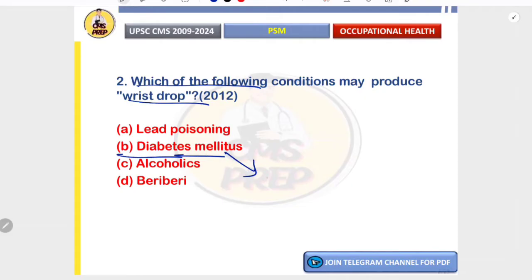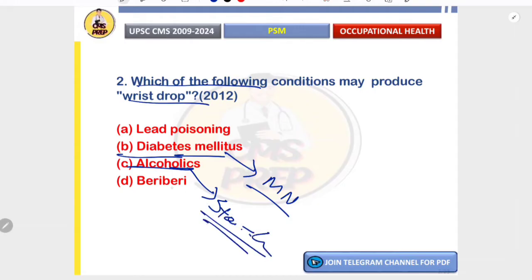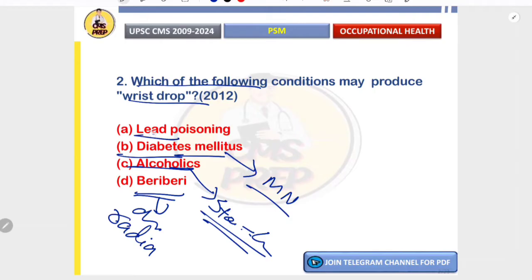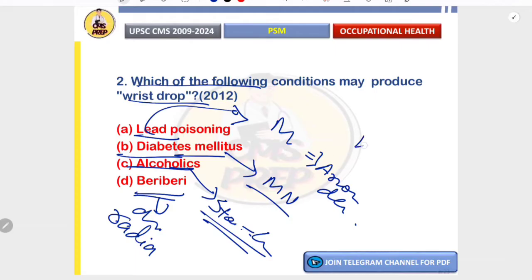Which condition may produce wrist drop? In diabetes mellitus there is symmetrical distal sensory loss rather than motor neuropathy. In alcohol, stocking-and-glove sensory neuropathy is seen, and in very severe forms symmetrical motor neuropathy, but no focal radial involvement. In lead poisoning, lead targets motor neurons — especially the radial nerve — causing axonal degeneration, leading to wrist drop due to extensor weakness.